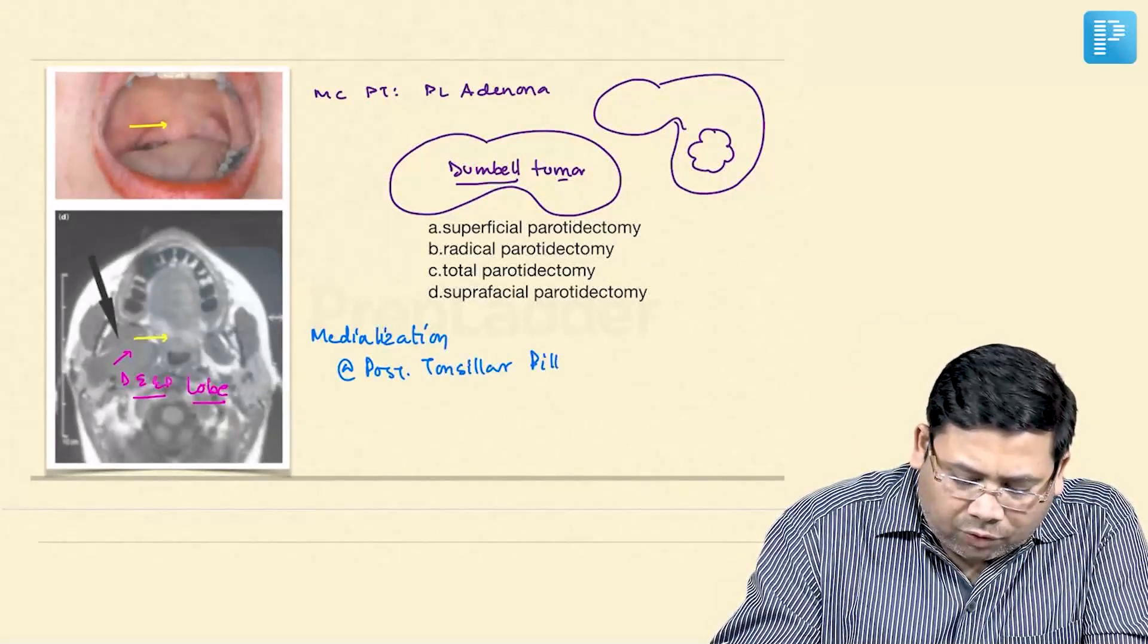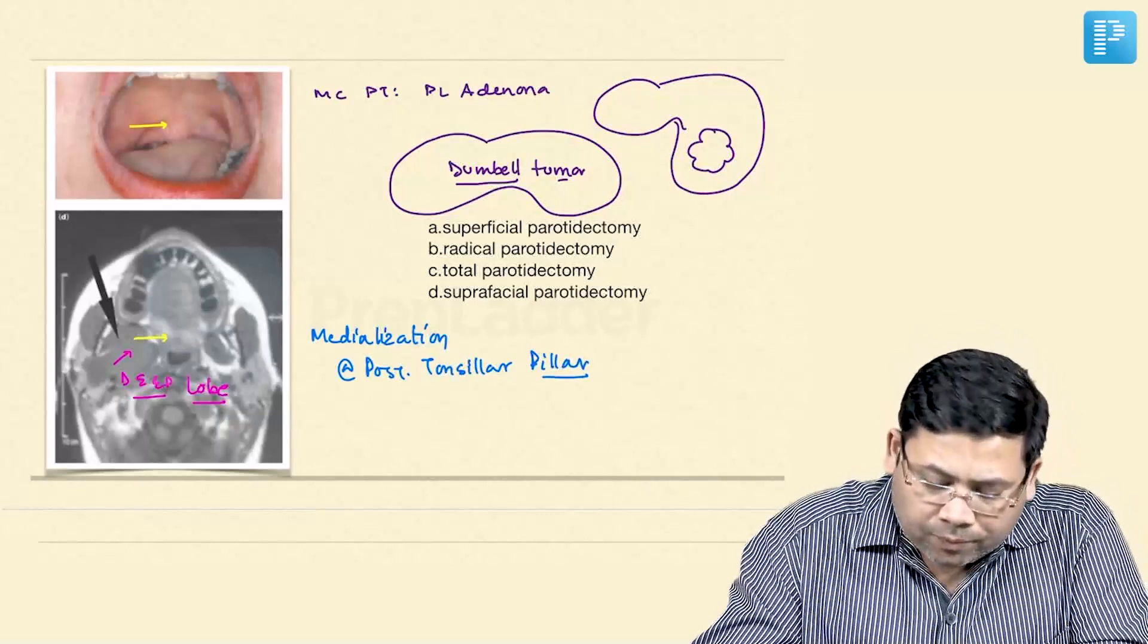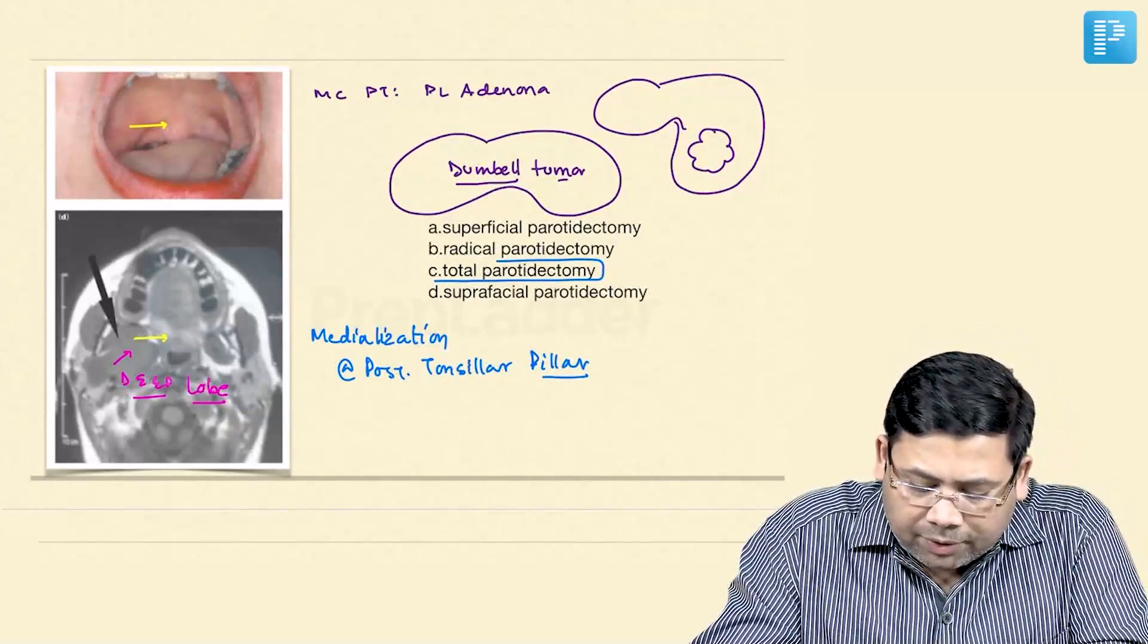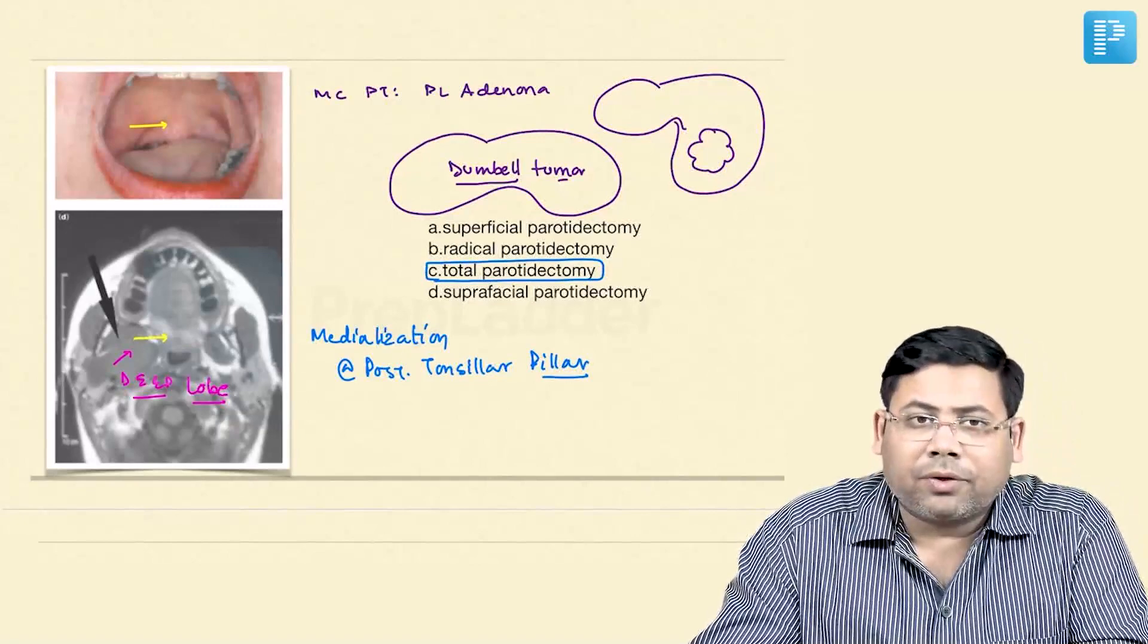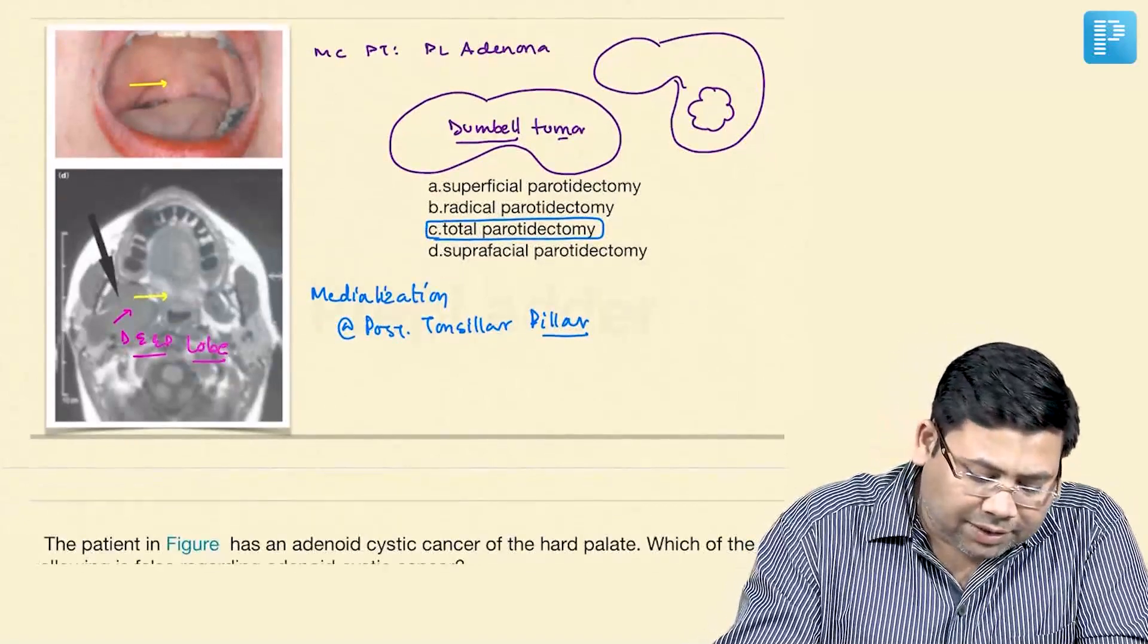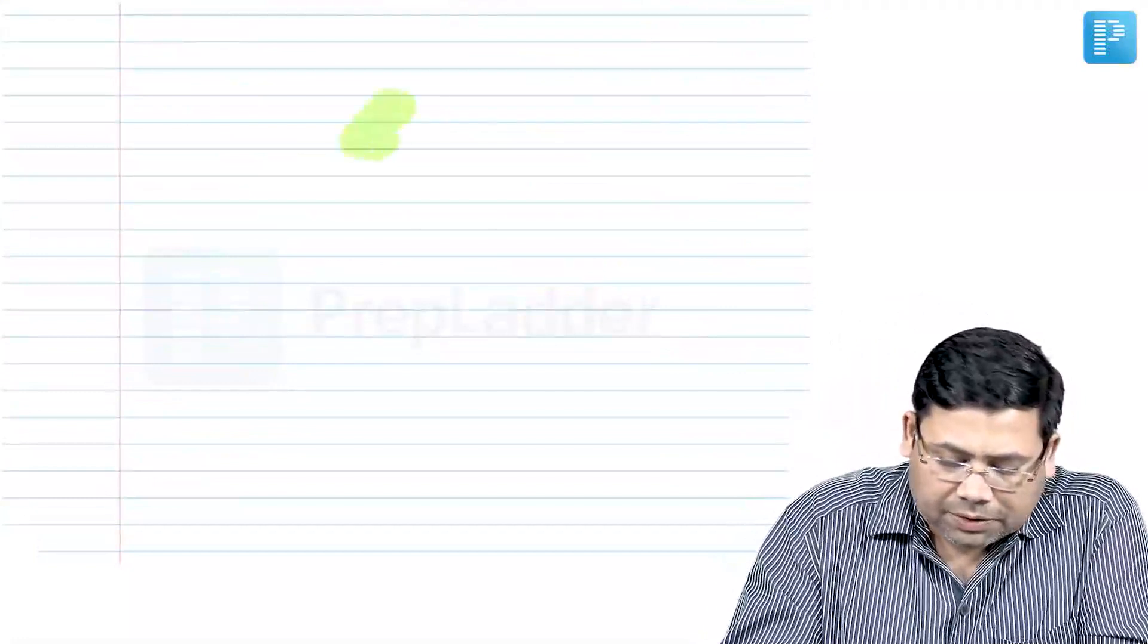If deep lobe is involved, total parotidectomy is the answer. Total parotidectomy, why? Let us quickly see an overview of the management of parotid mass.